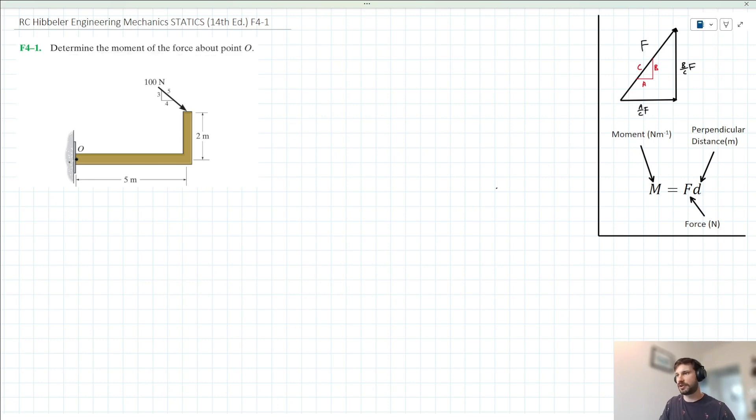We have this diagram here where point O is on the left, and we have this 100N force acting diagonally onto our structure. I feel like the best place to start with this problem is to decompose this 100N force into its constituent horizontal and vertical components, because that will provide a simpler basis on which to take moments.